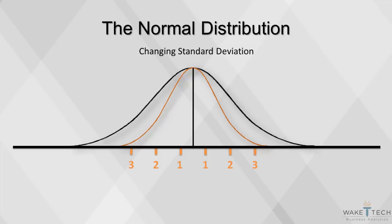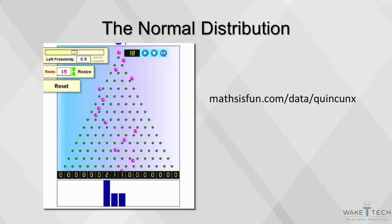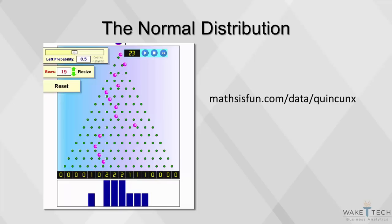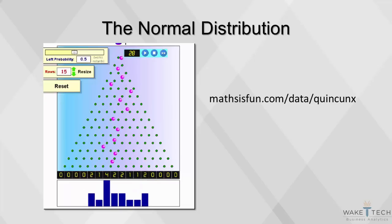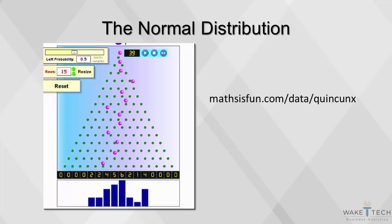Here's a tool you can play with online that illustrates a normal distribution. In real life, it looks like a triangular-shaped pegboard into which balls are dropped. When there is an equal probability that the balls will drop either left or right, their final placement forms a normal distribution. However, when the probability of the balls dropping left or right is unequal, which you can experiment with using this tool, the distribution changes.